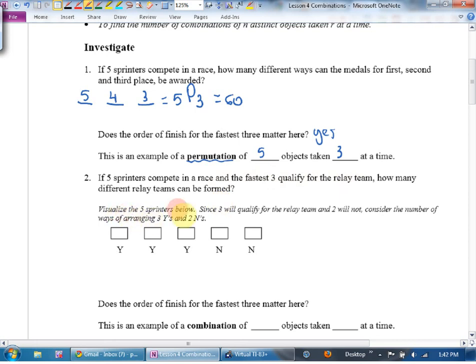If five sprinters compete in a race and the fastest three qualify for the relay team, how many different relay teams can be formed? You can visualize the five sprinters below. So, three will qualify, two will not. You can kind of think of this as saying, I'll have three yeses and two noes. That looks like a word. How many letters long is that word, grand total? How many y's? How many n's? The reason we start with words is, if we're clever, we can turn a lot of questions into words.